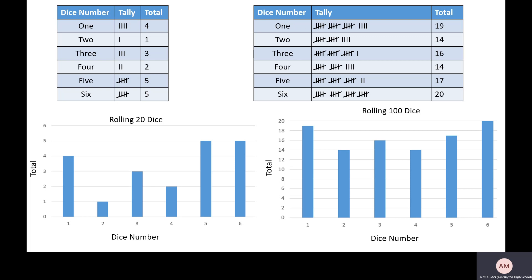So we rolled the dice. We rolled it 20 times, we rolled it 100 times. What's the point of this? So the point is to try out a formula.